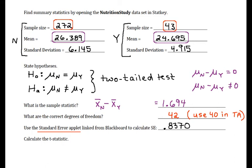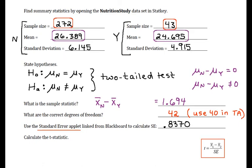All right, so our t-statistic, recalling this nice formula, is our sample statistic of 1.694 divided by the standard error of .837. And that gets us 2.024.